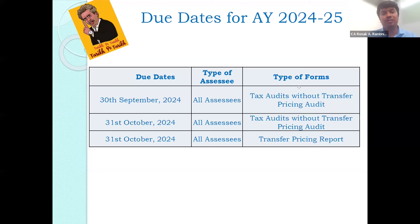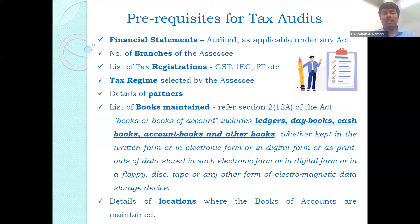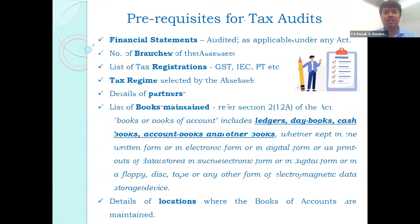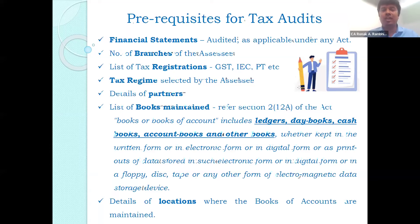Some prerequisites for the tax audit are listed — like a pilot's checklist before takeoff. Starting with the financial statements: whether they are audited or not audited under any other act, and whether financial statements are required to be audited under this act, along with the number of branches of the assessee.